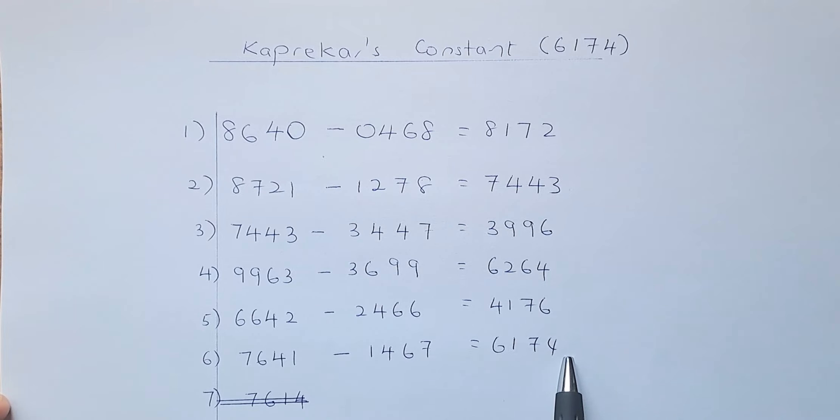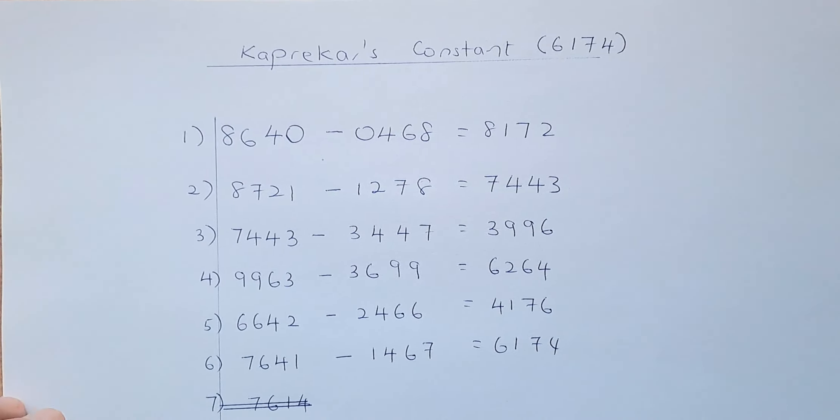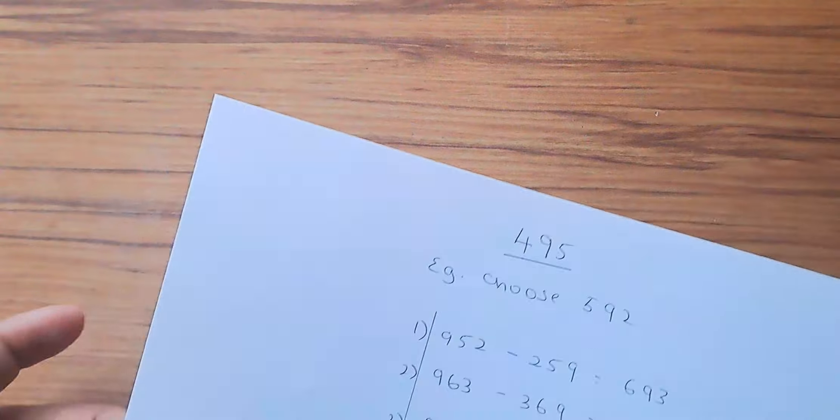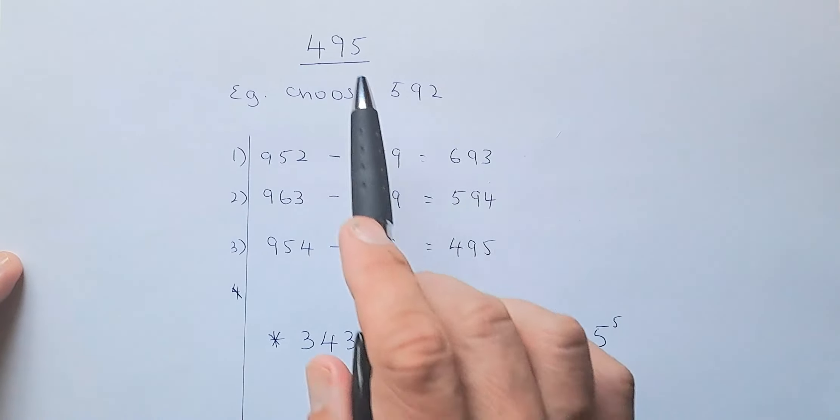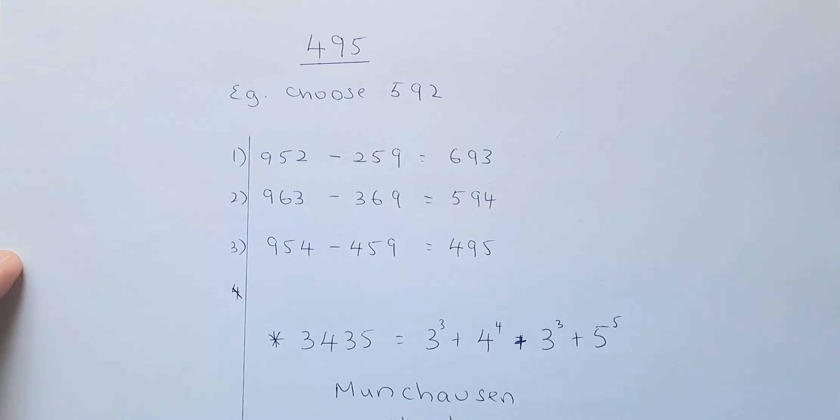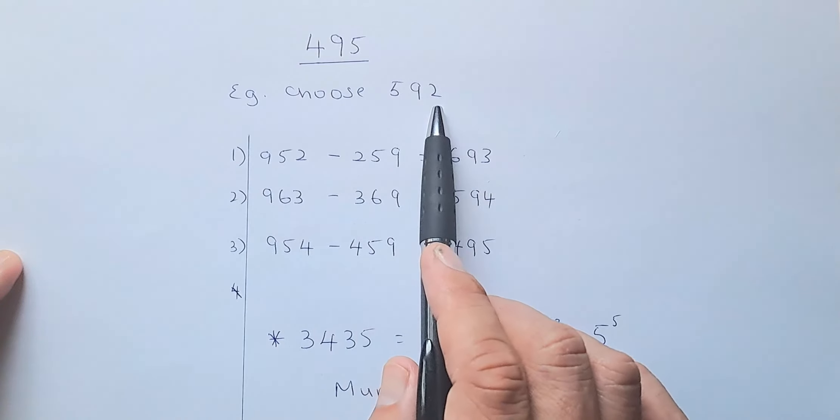So try another number and tell me whether it works. The Capricus constant for a 3-digit number, you don't like to do the 4-digit number, you can also do the 3-digit number, the number is 495. Suppose we choose the number 592.